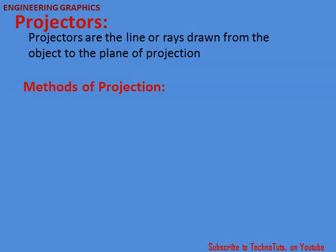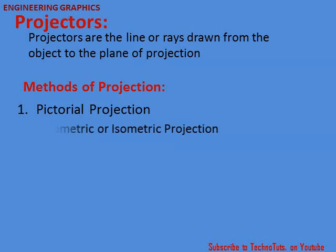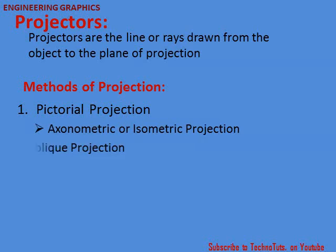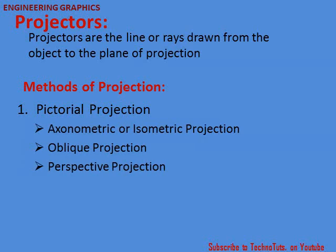For understanding projection, there are various methods we must go through. The first one is pictorial projection, which includes axonometric or isometric projection, oblique projection, and perspective projection. The other one is orthographic projection.